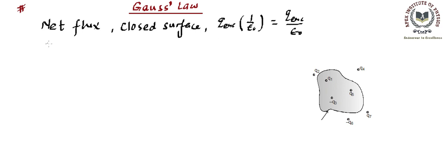The same statement mathematically can be written as the net flux, which is the closed surface integral of E dot dS. We know E dot dS is the flux passing through any surface, and since it is over a closed surface, this integration has a ring symbol indicating integration must be performed over the entire closed surface. This equals Q enclosed divided by epsilon naught — this is the mathematical representation of Gauss's Law.